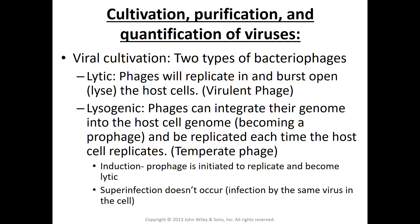Some viruses can do more — they can actually integrate into the host cell's genome, like we saw with the DNA choice for some viruses, and definitely for that RNA-to-DNA intermediate. When that phage integrates into the host cell's chromosome, it's referred to as a prophage.